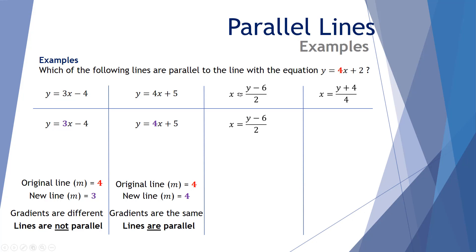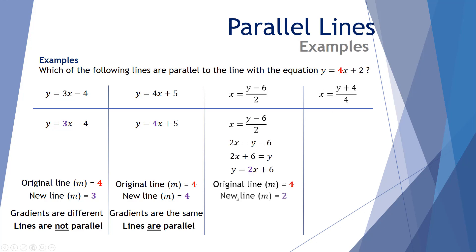Our third example: x equals y take 6 over 2. It's been rearranged to look more confusing, so let's simplify it into y equals mx plus c format. First, multiply both sides by 2 to remove the division. Then add 6 to both sides to isolate y. We end up with y equals 2x plus 6. The original line had a gradient of 4 and this new line has a gradient of 2 — gradients are different, so these two lines are not parallel.